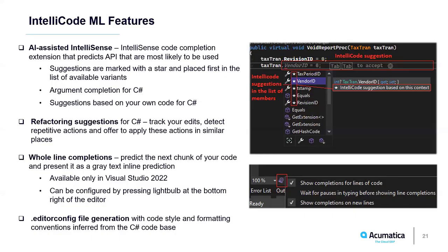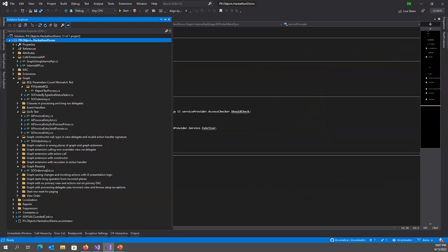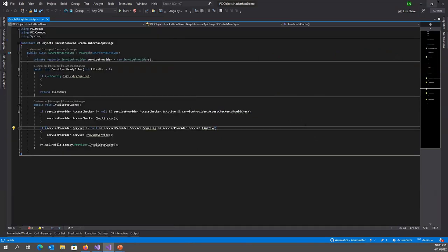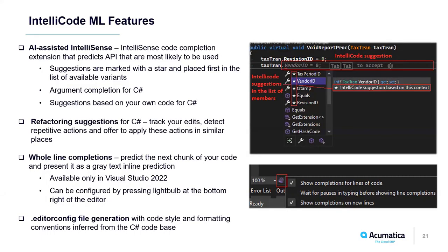Finally, for C# code bases, IntelliCode can do a clever generation of the .editorconfig file, inferring code style and formatting from your solution. To use it, open Solution Explorer and open the context menu for a project or solution — you will see the command to create a new editor config. IntelliCode will analyze your solution and infer code style for it. Like many Visual Studio components, IntelliCode has its own settings in Visual Studio Options in a separate IntelliCode section.